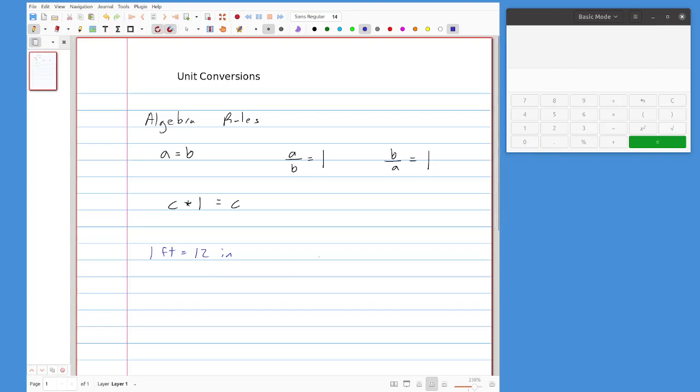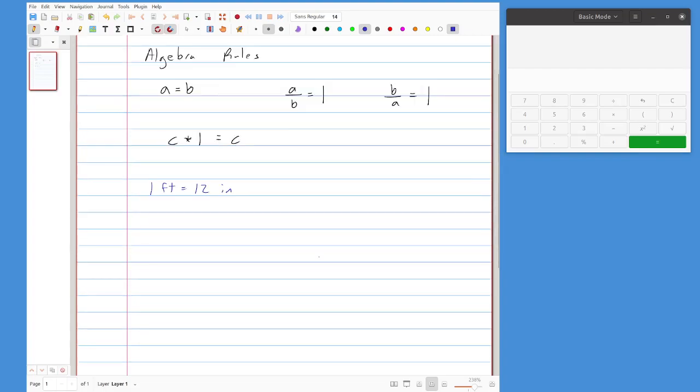So now we can actually start doing some conversions, and we're going to do this in both directions. So let's start and let's say we have something like 2.5 feet, two and a half feet, and I want to convert that into inches.